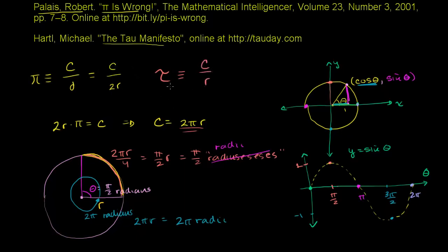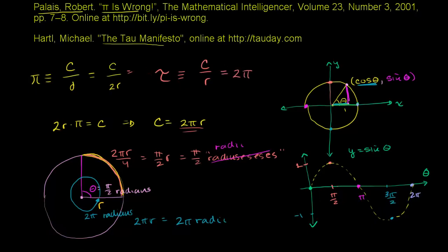Pi is just one half of this — circumference over 2r is the same thing as one half times circumference over r. So pi is just half of tau, or another way to think about it is that tau is just 2 times pi.